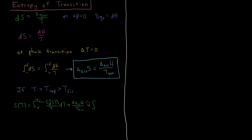Plus, our next integral goes through the entire liquid phase, from the melting temperature T_fus to the boiling temperature T_vap, of the constant pressure heat capacity of the liquid as a function of T, divided by T, dT. Now we've gone from the melting temperature to the vaporization temperature, so now we add the enthalpy of vaporization divided by the temperature of vaporization, which gives us the entropy of vaporization from that formula.